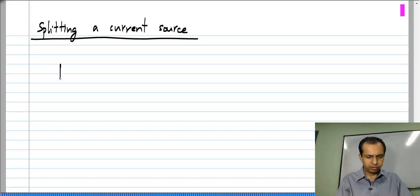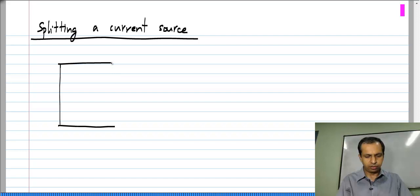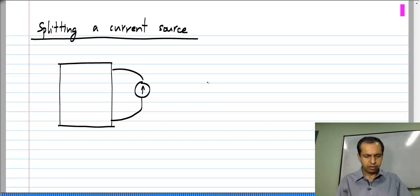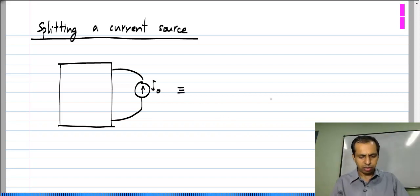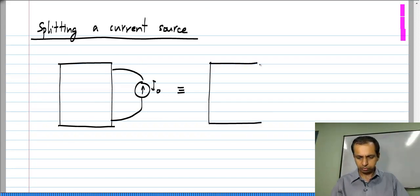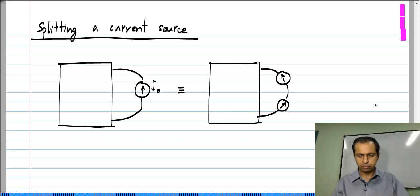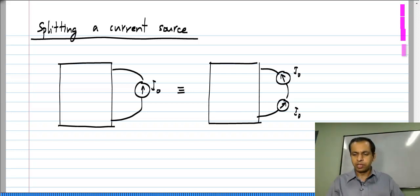Let us say we have some circuit — it could be any circuit. It has a current source; I have not imposed any restrictions on this circuit. It could be linear, non-linear, whatever, and it has this ideal current source connected somewhere. Let us say the value is I naught. It is clear that this is exactly equivalent to two identical current sources in series.